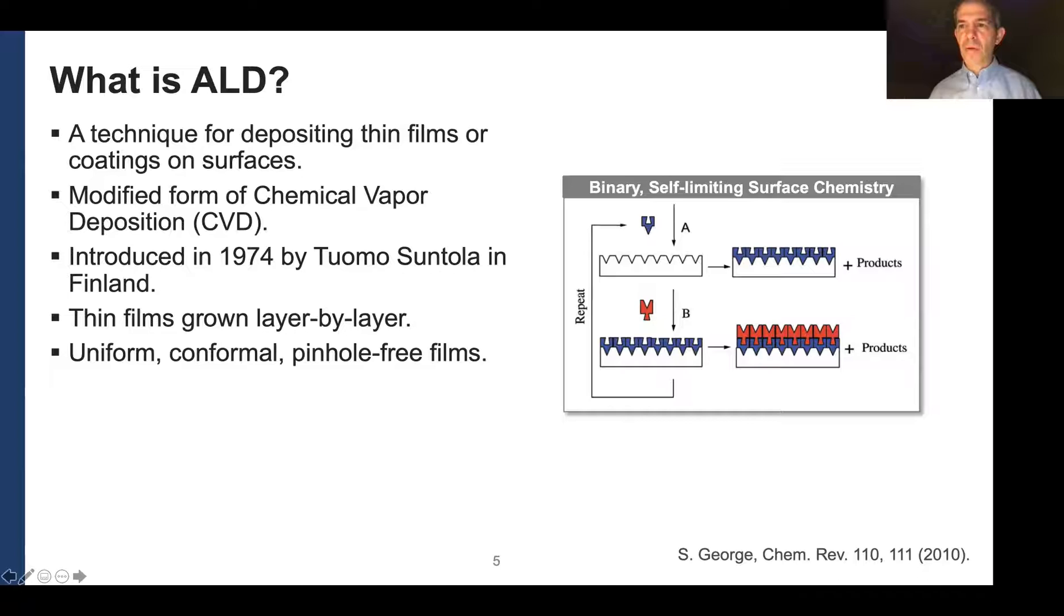In chemical vapor deposition, sometimes the chemistry produces particles in the vapor phase. They deposit and can lead to pinholes. So to solve that problem, Tuomo Suntola separated the precursors in time. And you have this schematic here where you have this binary chemistry where you have an initial surface and you add your precursor A, you saturate all the surface sites, maybe produce some byproducts. Then you add precursor B and that reacts with precursor A to give you this film, A-B chemistry film. And this allows you to use A and B chemicals that are very reactive. Since they only meet each other on the surface, you're going to get a film on the surface and you're never allowing A and B to meet in the gas phase where they might form some particle that's going to disrupt the conformality and the uniformity of your film.